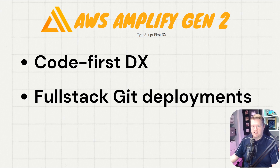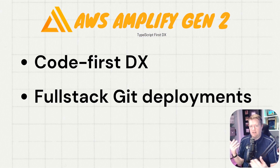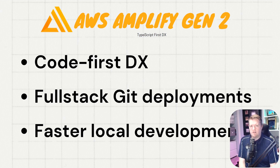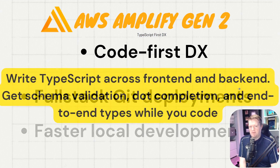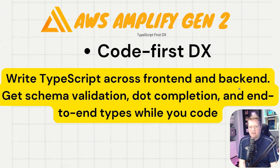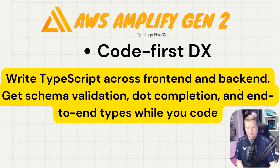With code-first development, you can write TypeScript across the front-end and back-end, get schema validation, auto-completion, and types. If you've seen Zod before, this might look familiar. Let me give you an example: we're creating a brand new application using AWS AppSync, which is our managed GraphQL service. That will hold all our data in DynamoDB. We'll also use an identity provider called Cognito for logins, authorization, and auth.